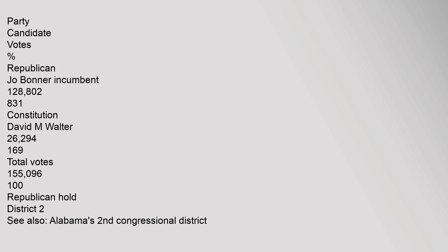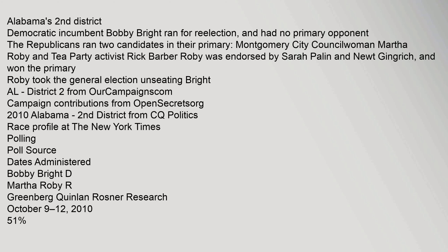Alabama's 2nd District: Democratic incumbent Bobby Bright ran for re-election and had no primary opponent. The Republicans ran two candidates in their primary: Montgomery City Councilwoman Martha Roby and Tea Party activist Rick Barber. Roby was endorsed by Sarah Palin and Newt Gingrich, and won the primary. Roby took the general election, unseating Bright.